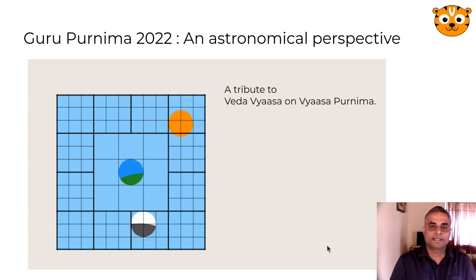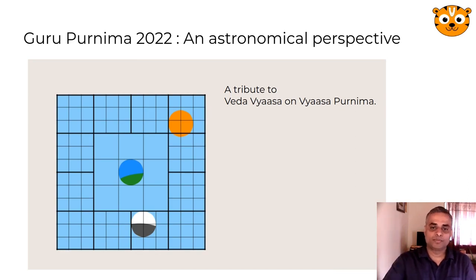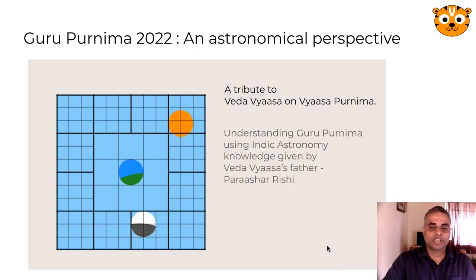Namaste. This Guru Purnima, which is 13th July 2022, let us pay a tribute to Veda Vyasa. Guru Purnima is also called Vyasa Purnima. We are going to understand Guru Purnima using Indic astronomy knowledge given by Parashar Rashi.